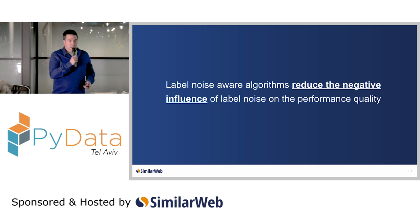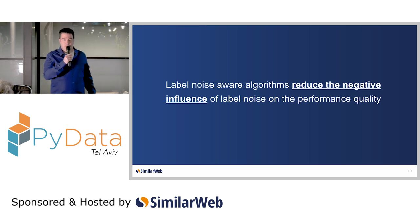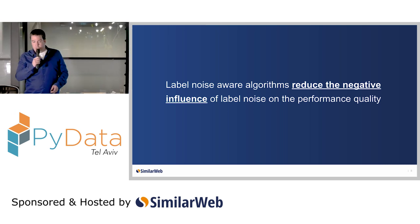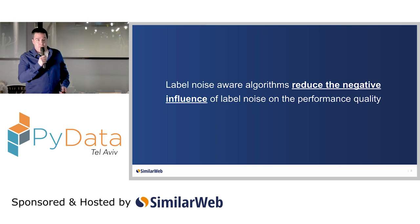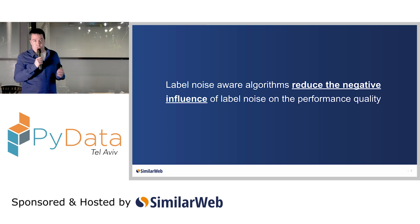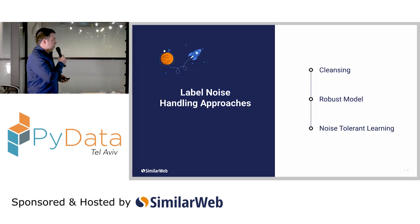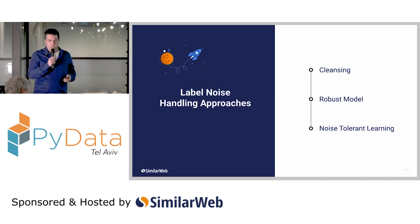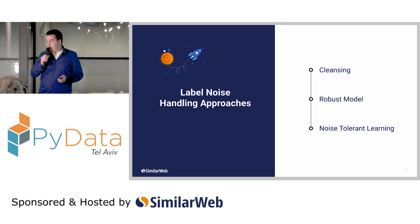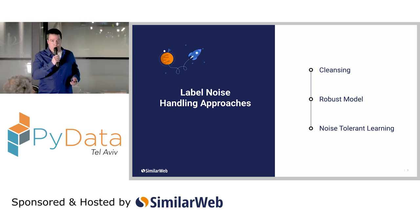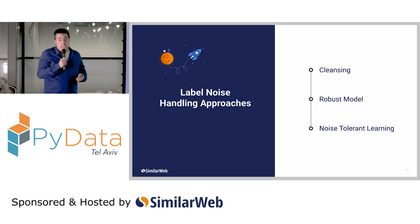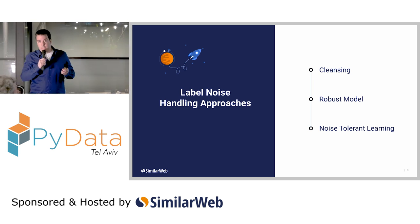The mission of label noise research is to find algorithms that can help reduce the negative effect of label noise. To do so, researchers need to find ways to make machine learning models and pipelines more robust to different types of label noise. In general, the scientific literature depicts three approaches to handle label noise: a cleansing approach, a robust model approach, and a noise-tolerant learning approach. In the next few slides, I will briefly describe each of these approaches and give examples of how they are used in machine learning pipelines.